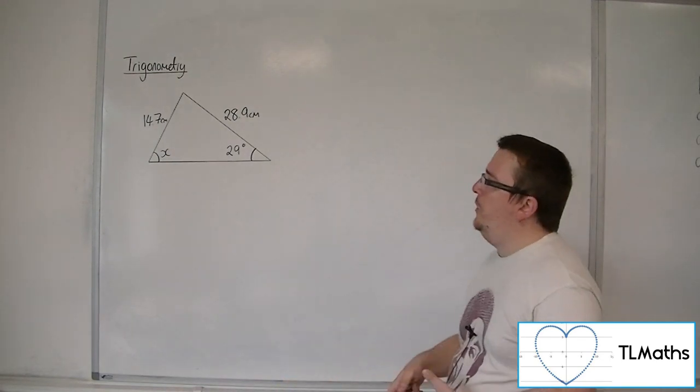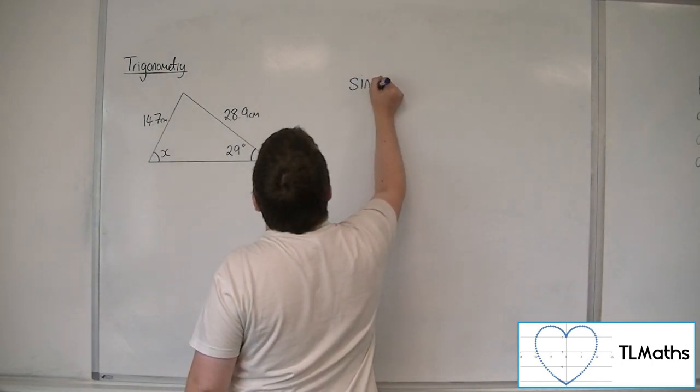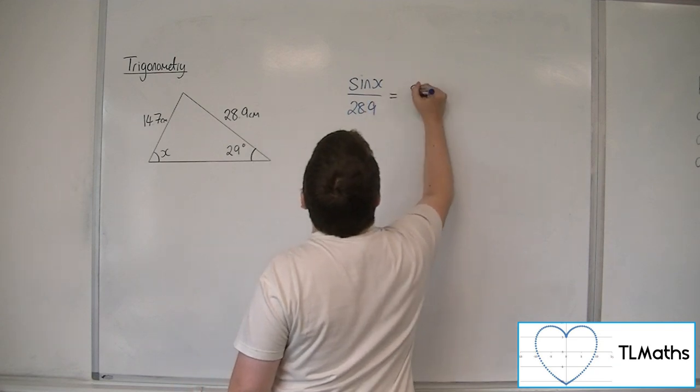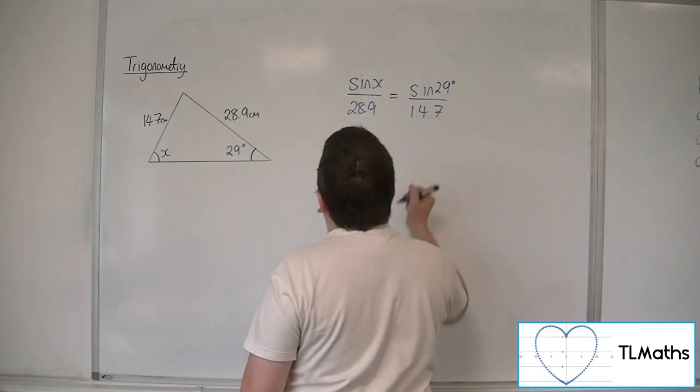So it makes sense that we want to use the sine rule. So sine of the angle x over 28.9 must be sine of 29 over 14.7.